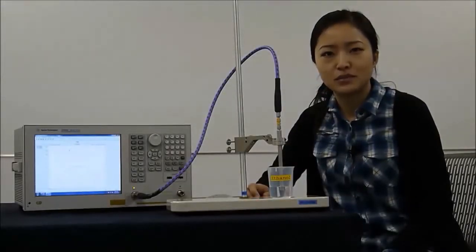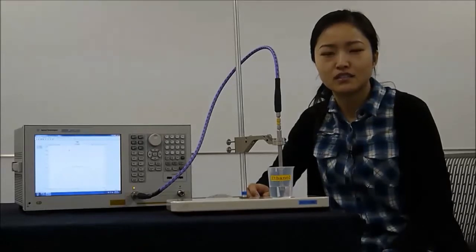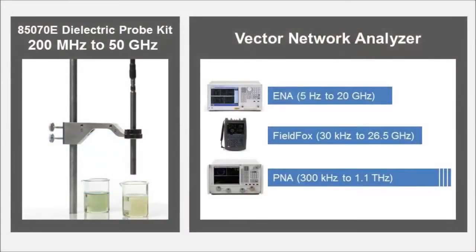The E5063A network analyzer goes up to 18 GHz. This setup works with all of our network analyzers. The probe can go up to 50 GHz when used with a network analyzer.